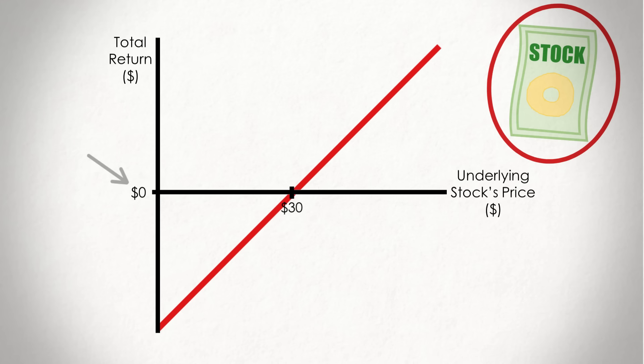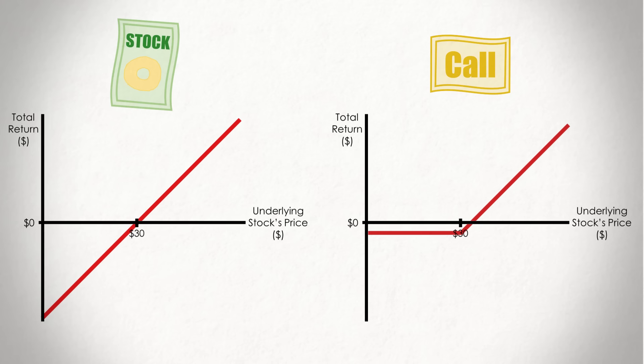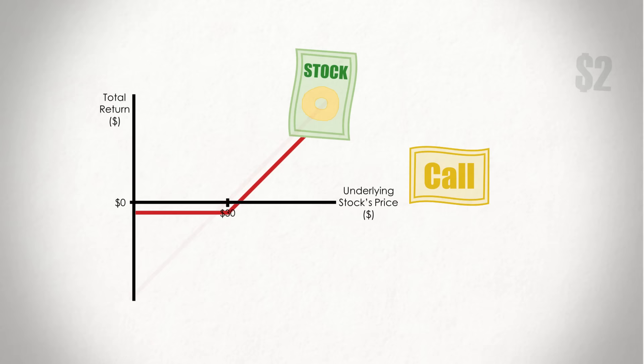So now let's look at a call for a Plain Bagel share with the following stats. If we plot the return, it looks a bit more interesting. As you can see, the two have similar upside potential, though the $2 premium you pay for the option brings it slightly below the share's line. This upside happens when the stock's price falls above the option's strike price, aka when the call is in the money.